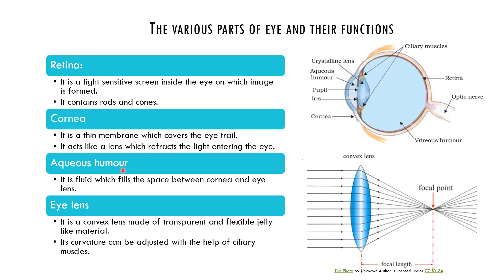Next is aqueous humor — it is a fluid present between the cornea and the eye lens. Next is the eye lens. It is a convex lens made of transparent and flexible jelly-like material. In a convex lens, it is thinner at the edges and thicker in the middle. Whatever light rays fall on the convex lens, after refraction they meet at a single point called the focal point. This property is called convergence.